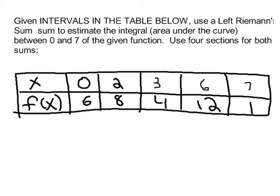This problem is a little bit different than the previous ones we've done, because now it says, given the intervals in the table below, use a left Riemann sum. And the key to this problem is we're going to do a left Riemann sum, but the widths are going to be variable. You see that the first rectangle has a width of 2. The next rectangle will only have a width of 1, then 3, then 1. Pause the video for 2 to 3 minutes while you do this left Riemann sum.